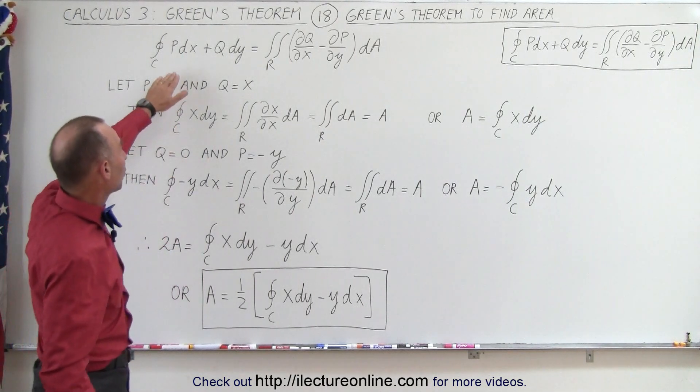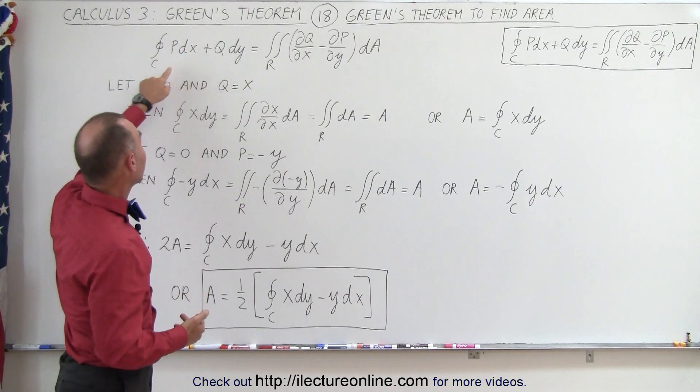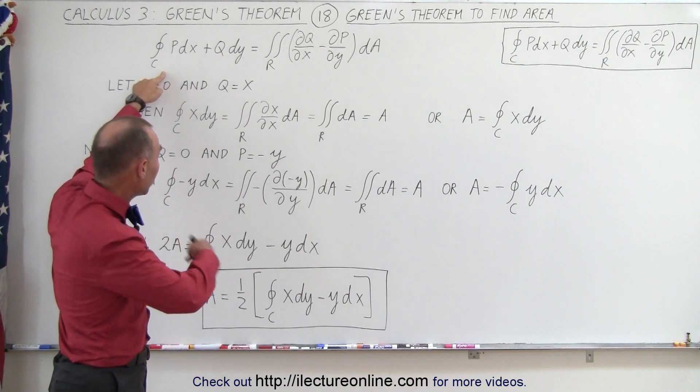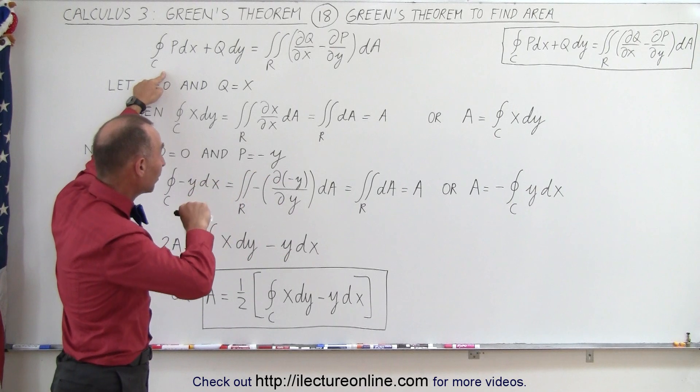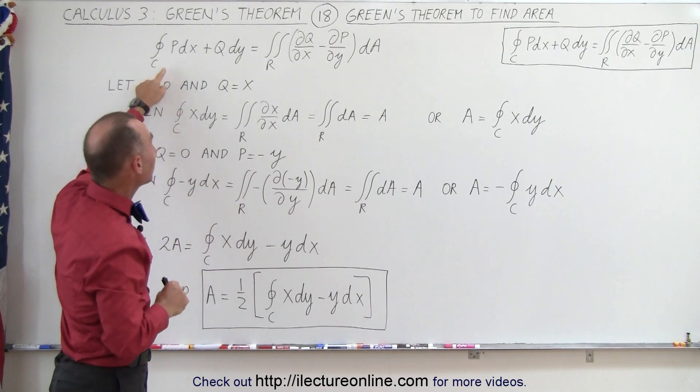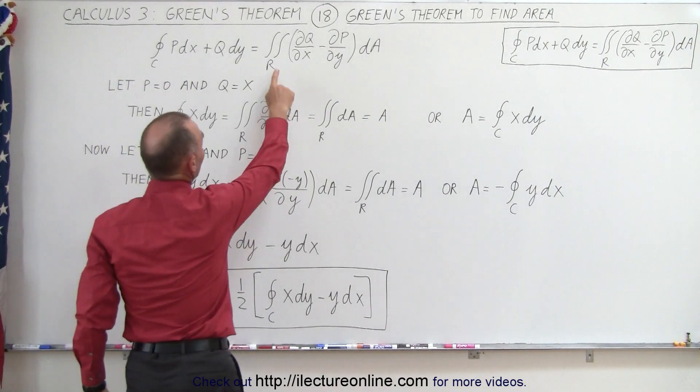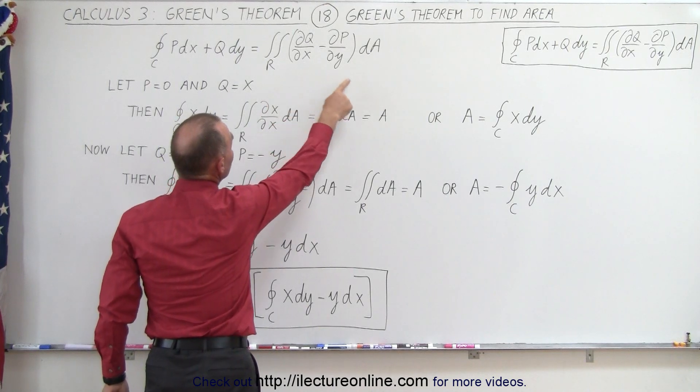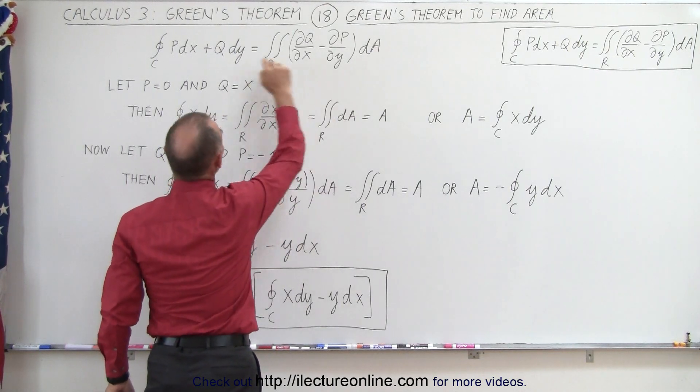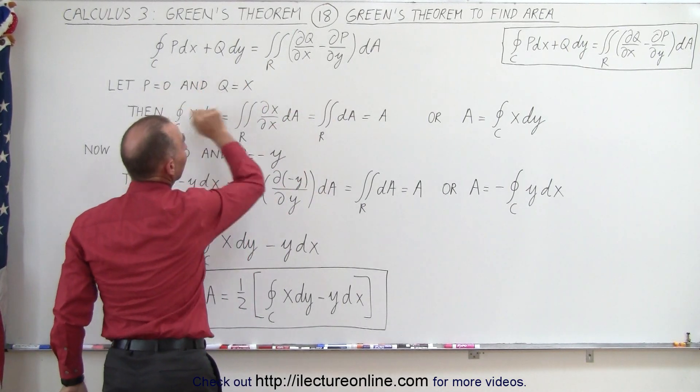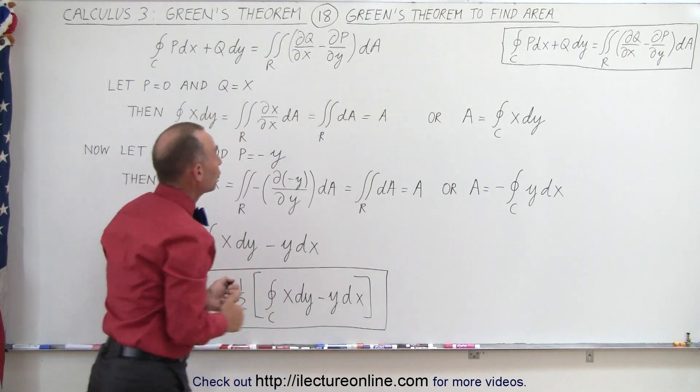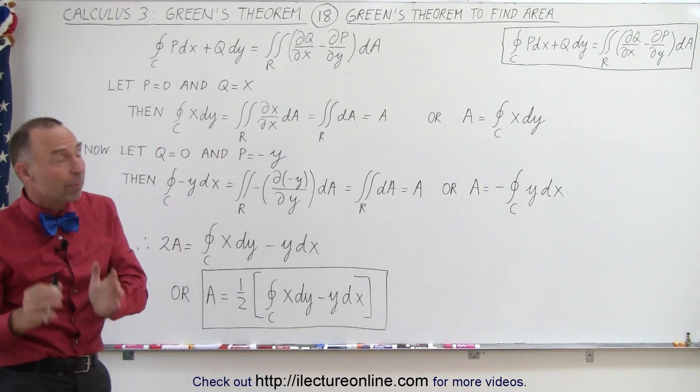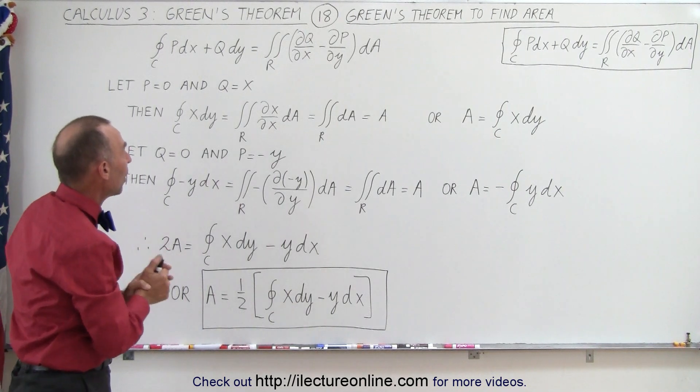So starting with what by now should be fairly familiar is that we can take the line integral along a complete closed path that can then be expressed as a double integral over the region enclosed by the path, and of course the integrand is going to be made up of the partial of q with respect to x minus the partial of p with respect to y.